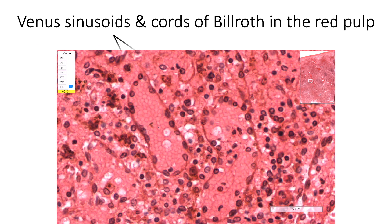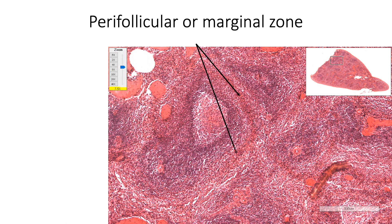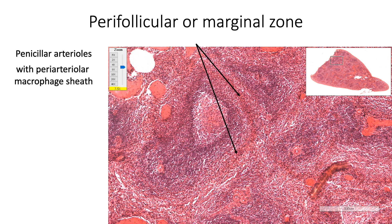Here we are seeing the venous sinusoids and cords of Billroth in the red pulp. Between the white pulp and the red pulp, there is a perifollicular zone or the marginal zone. This has penicillar arterioles surrounded by a peri-arteriolar sheath of macrophages. Lymphocytes are loosely arranged here in the reticular network, and blood enters the open circulation of red pulp from these penicillar arterioles.